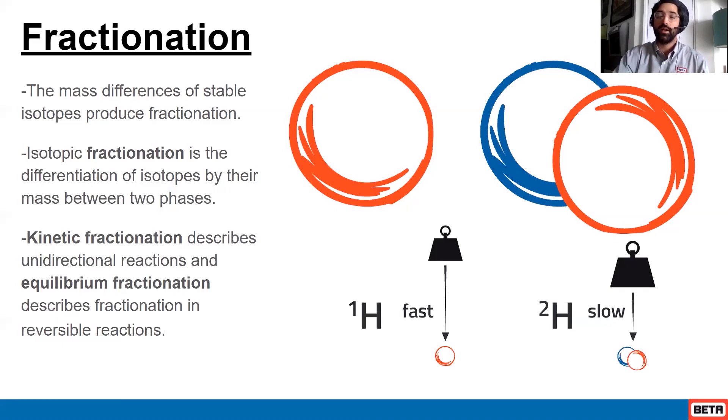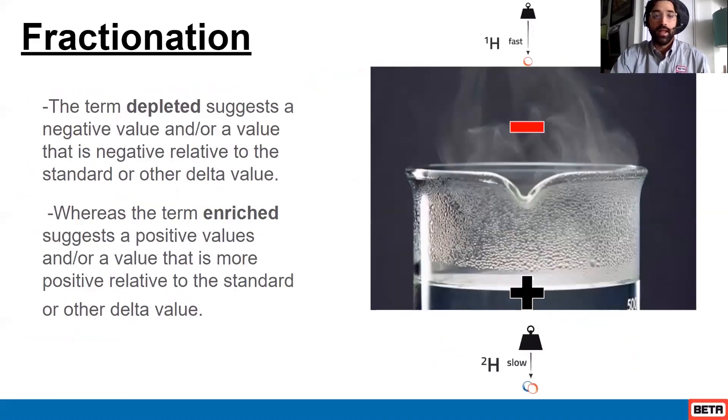Now when we talk about heavy and light isotopes, we use terms depleted and enriched. So depleted just suggests that it's less than the standard or another value, and enriched refers to it being greater than the standard or relative to another value.